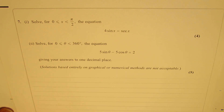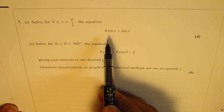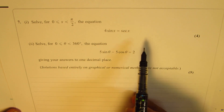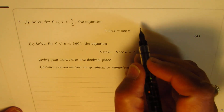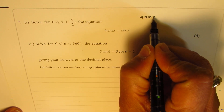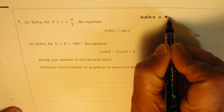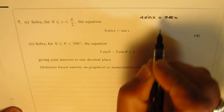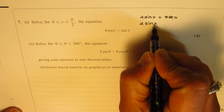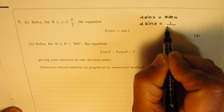These two are very typical test questions and I hope their solution will help many students. The first equation is 4 sin x equals secant x. Secant can be written as 1 over cosine, so we get 4 sin x equals 1 over cos x.